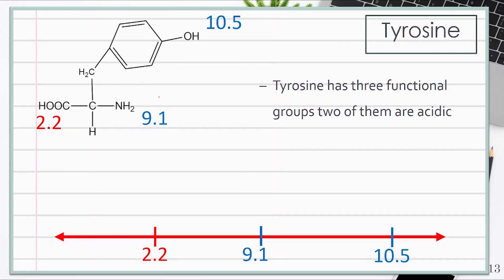Let's look at how to calculate the charge and the pI of tyrosine. Tyrosine has three functional groups with three pKa values indicated here. Looking at the number line, I have assigned the values 2.2, 9.1, and 10.5.